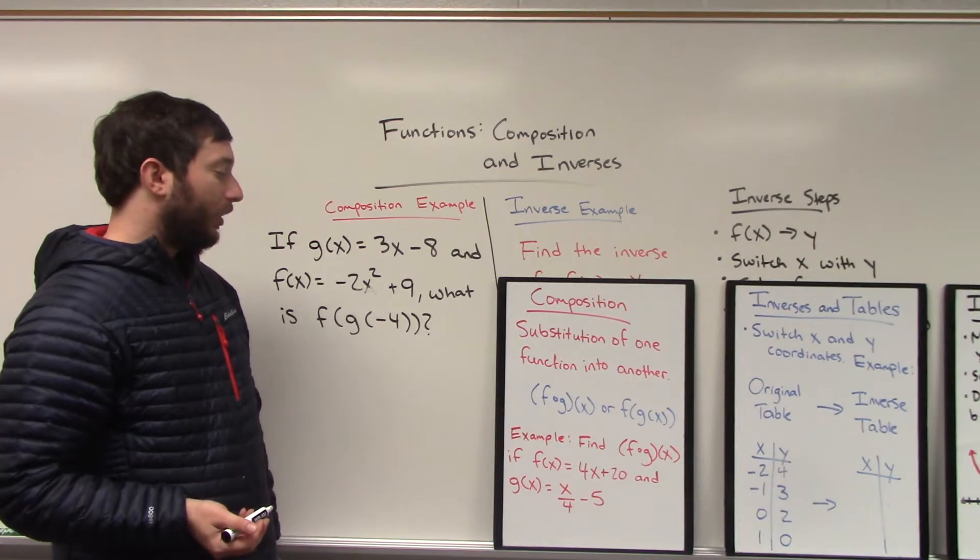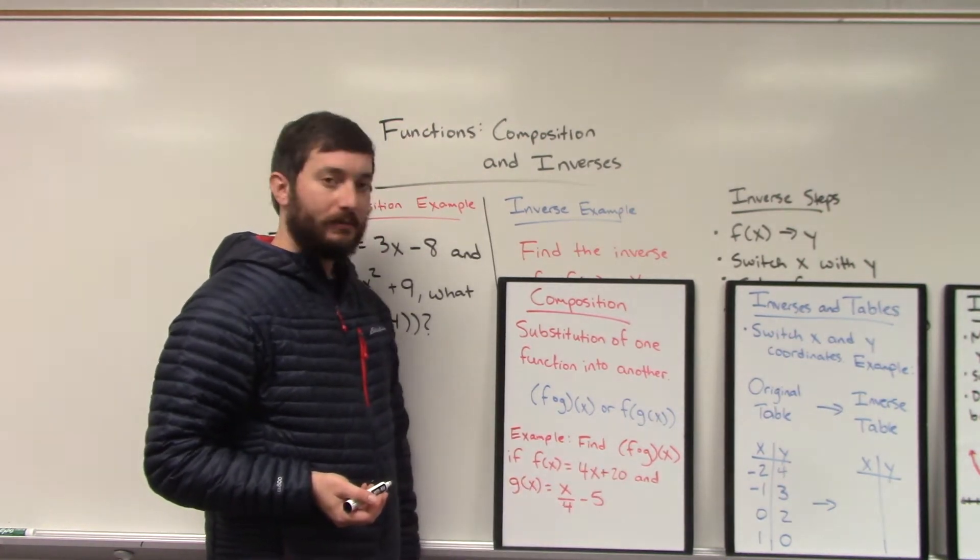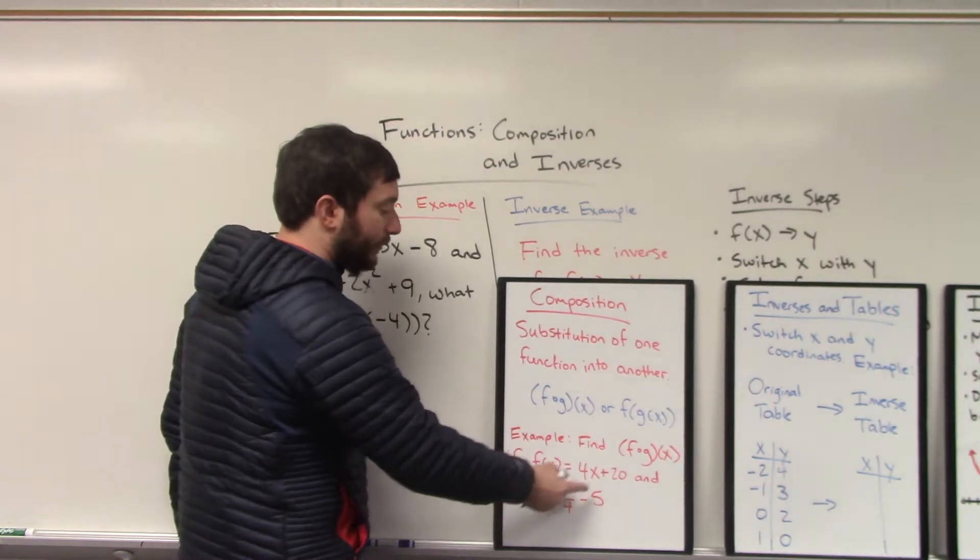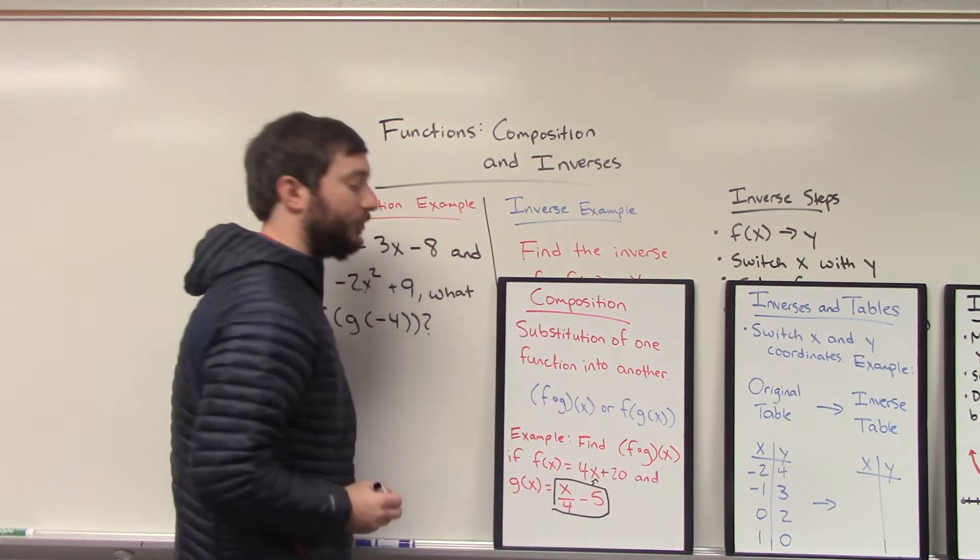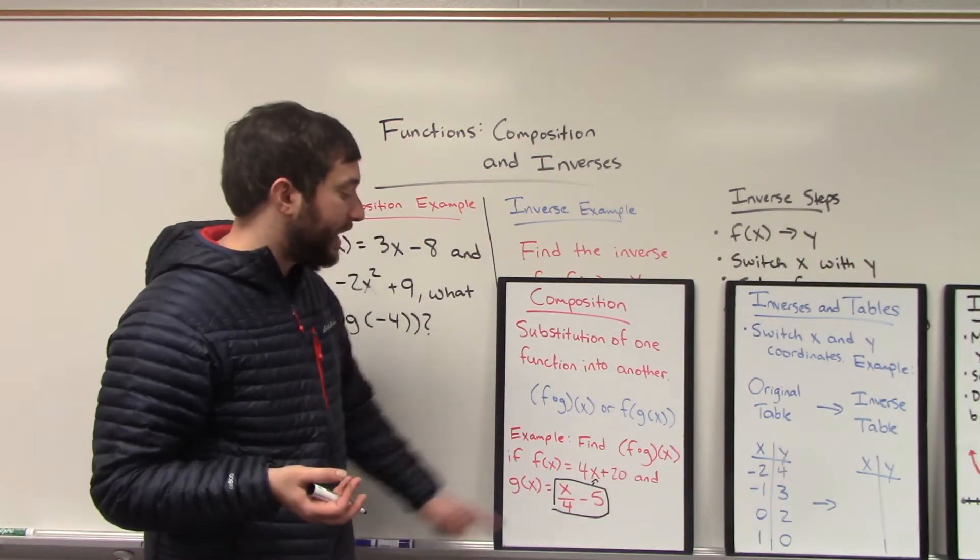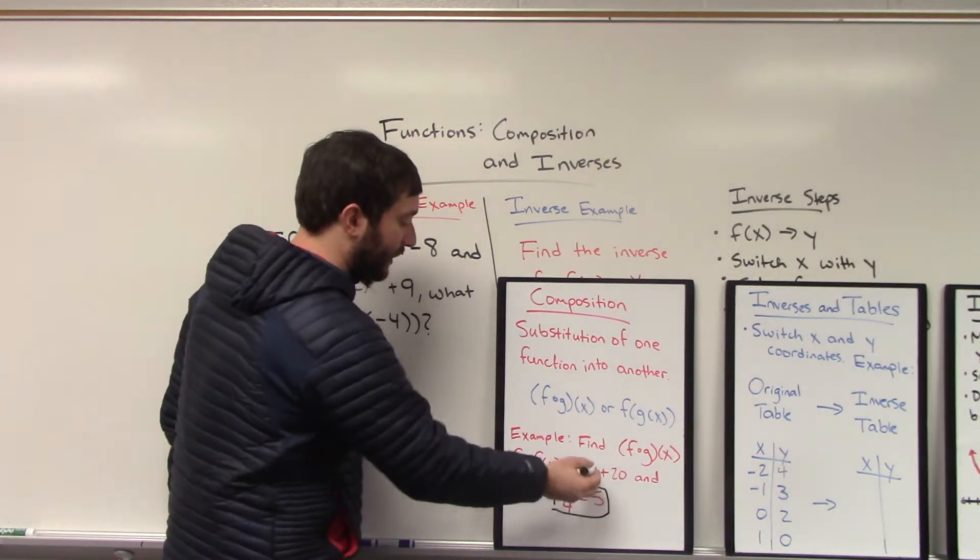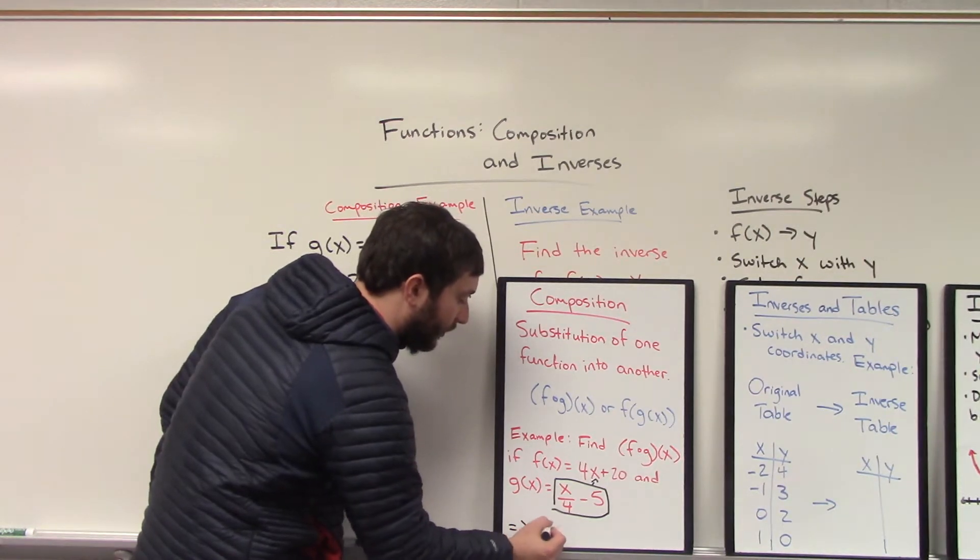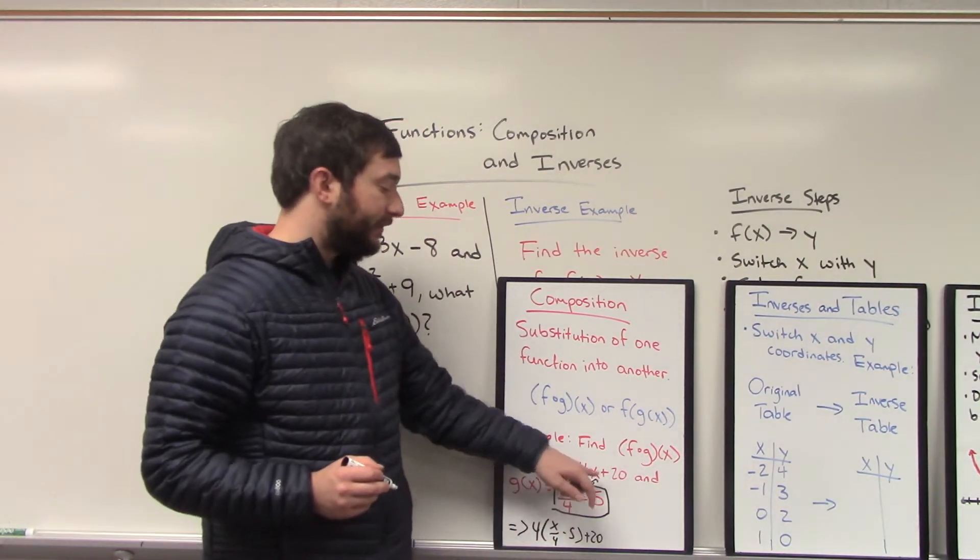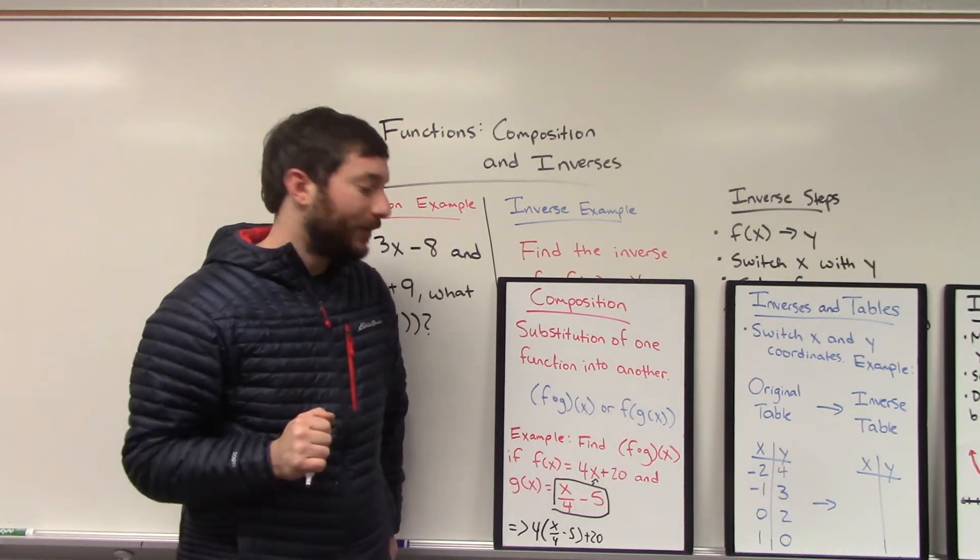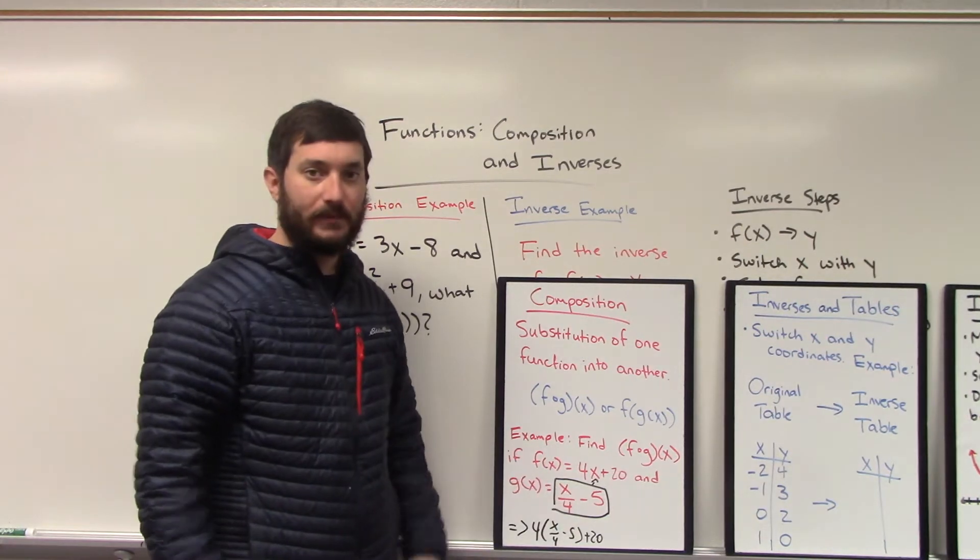For example, what this really means is I'm going to place g inside of f. So how is that going to look? In this case, if f(x) = 4x + 20 and g(x) = x/4 - 5, to plug g into f means to replace the variable with g. You might want to draw a box, a little arrow pointing to that variable. Sometimes you have more than one variable and you would replace that box with both variables in f. In this case, f only has one variable, so we're only going to have to replace one different thing.